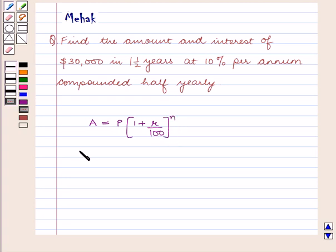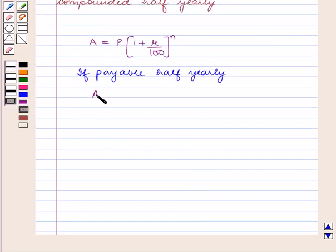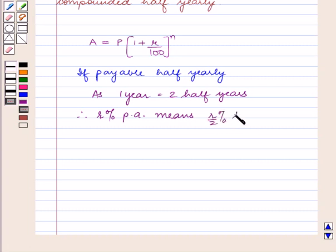If payable half-yearly, as 1 year equals 2 half years, therefore R% per annum means R/2% half-yearly.